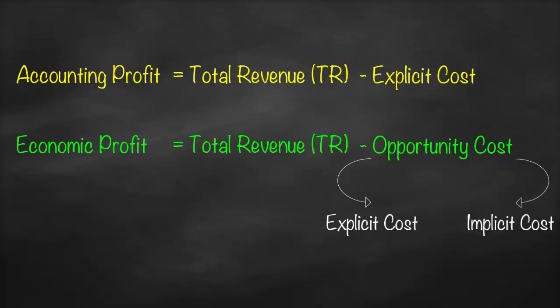Therefore, economic profit will always be lower than accounting profit, because we deduct implicit cost from economic profit.